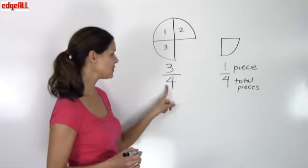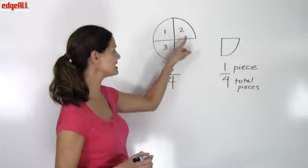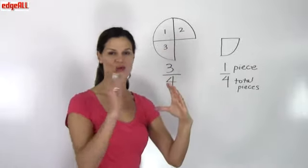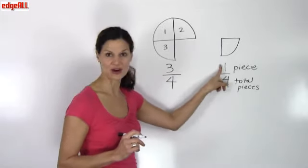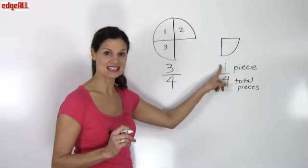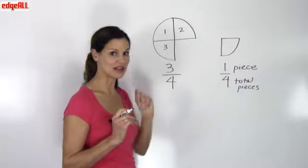And it represents the total number of pieces that my whole was cut into. The number on the top is the numerator, and it represents the number of pieces that we're counting.